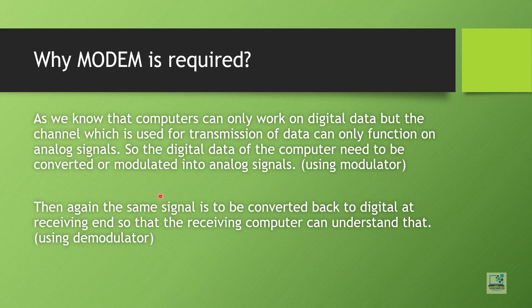Computers can only work on digital data, but the channel used for data transmission can only function on analog signals. Computers can only understand binary — digital 0 and 1 — but channels like telephone lines or radio waves can only be used with analog signals. So the modulator converts digital data to analog signal, and at the receiving end the demodulator converts the analog signal back to digital data.